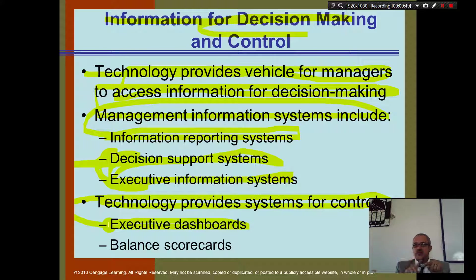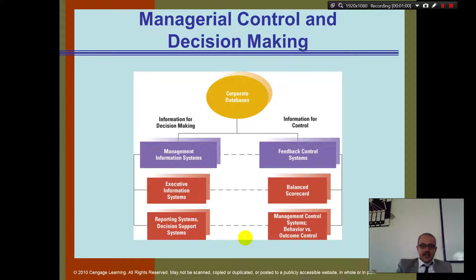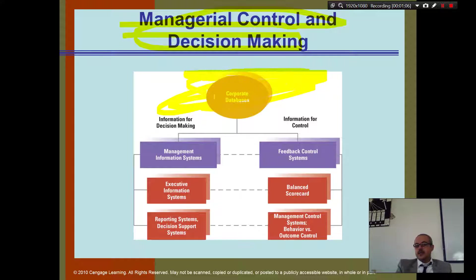On the dashboard you can see whether employees are performing, how many people are in classes, how much money the bank has in the branch, and there's also the balanced scorecard. This covers managerial control and decision making, corporate databases, information, decision making, and information control.